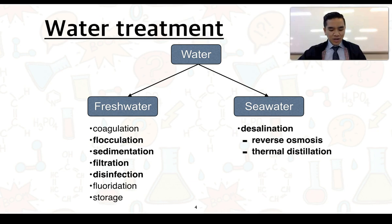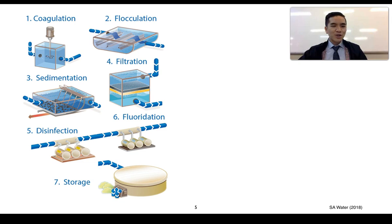In terms of seawater, generally the processes we refer to them as desalination and this can consist of either reverse osmosis or thermal distillation. From this image here you can see the various treatments that freshwater undergo in order to ensure its safety for human consumption and use. So starting off here with coagulation and flocculation, that's what we're going to talk about next.